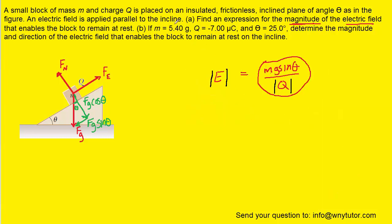For part B of the question, we simply plug in the given mass, charge, and angle to find the magnitude of the electric field. We need to convert grams to kilograms by multiplying by 10 to the minus 3, and microcoulombs to coulombs by multiplying by 10 to the minus 6.